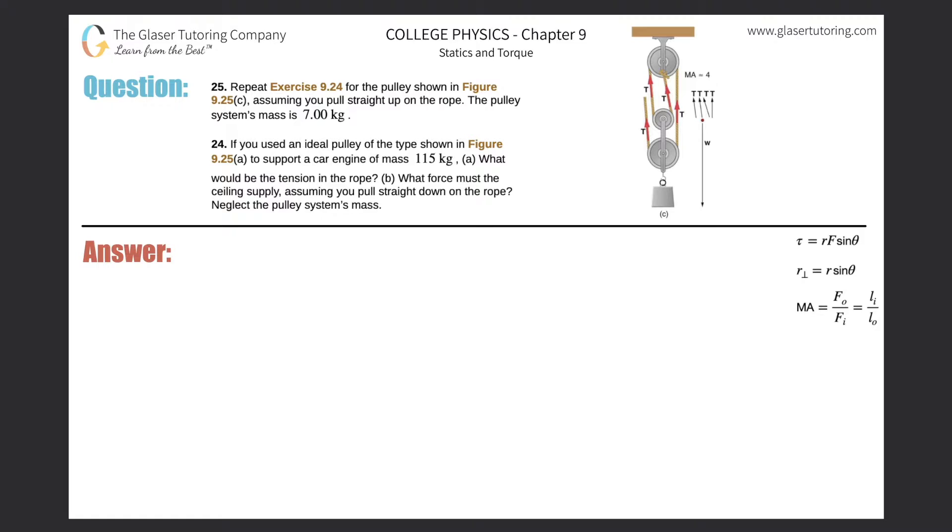Number 25, repeat exercise 9.24 for the pulley shown in figure 9.25 letter C. Assuming you pull straight up on the rope, the pulley system's mass is 7 kilograms.